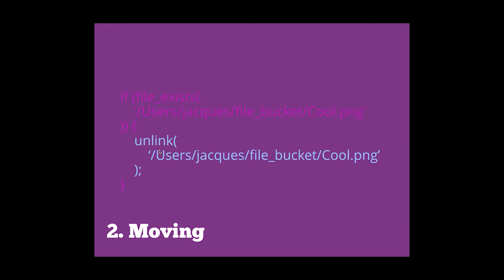unlink() is the way to delete files. It simply takes one input: the path to the file. Interestingly, there is a delete() method in the PHP documentation, but it's just there to point you to the unlink() method. I always find that pretty funny.